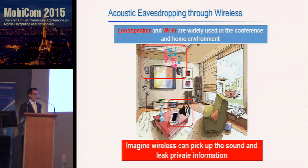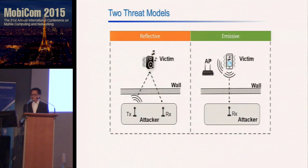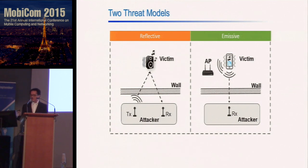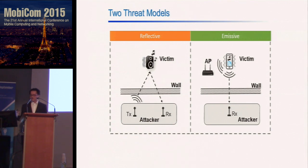To understand how to conduct this kind of attack in practice, we propose two practical threat models: reflective and emissive. In the reflective attack, the attacker sets up a pair of transceivers — the transmitter sends out wireless signals to hit the loudspeaker, and the attacker tries to recover the audio from the received signal. In the emissive attack, a victim device like a smartphone is communicating with a nearby access point, and the attacker recovers the audio by sniffing the outgoing packets from the smartphone.